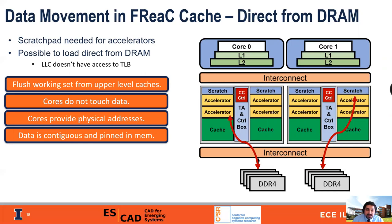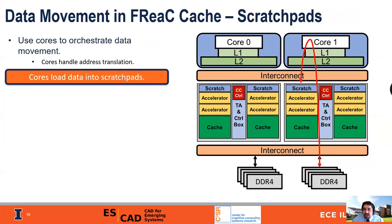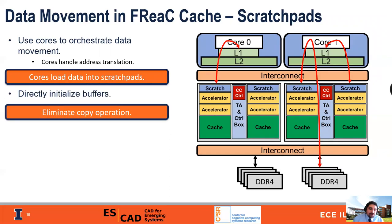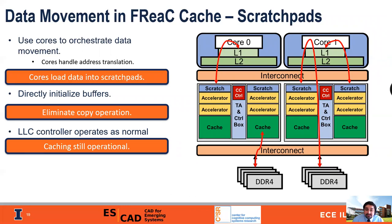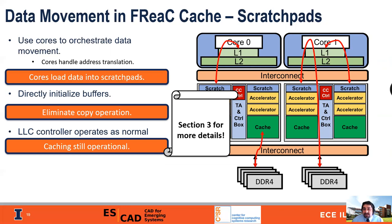Therefore, what we need to do is flush the working set from the upper level caches, make sure the cores don't touch the data, and the cores would have to provide physical addresses to the controllers — data would have to be contiguous and pinned in memory. A better solution is to use the cores to orchestrate data movement since they can handle all address translation and load data from DRAM into the scratch pads. Instead, what we do is directly initialize buffers into the scratch pads, eliminating one copy operation wherever possible. Finally, the LLC controller operates as normal, and if you've partitioned some space to remain as a cache, it'll continue to operate as a cache. For more details, take a look at section three.